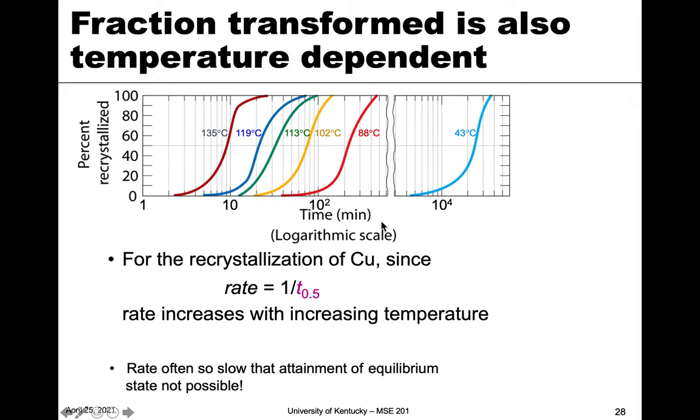The reason we typically put time as a log scale is because the differences between, say, this curve and this curve are quite drastic. Here we're talking about 10 minutes, roughly, and here we're talking about 10 to the fourth minutes for this reaction at 43. So it's obviously very highly dependent on the temperature. This is actually for the recrystallization. We've talked about recovery, recrystallization, and grain growth. This is recrystallization of copper. Here again, the rate is one over T to the one half. We see that the rate increases with increasing temperature. Down here at 43, this reaction is very slow compared to the high temperature.